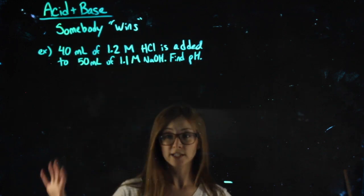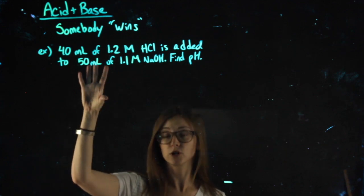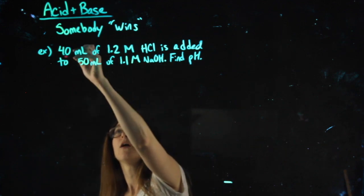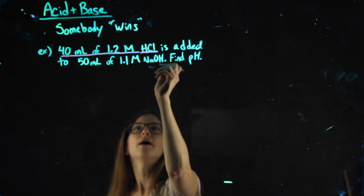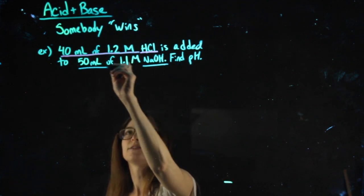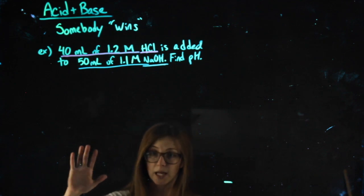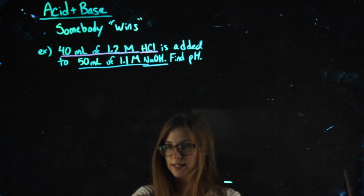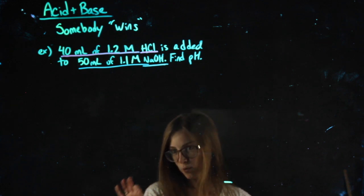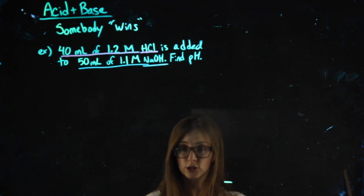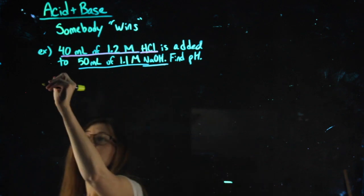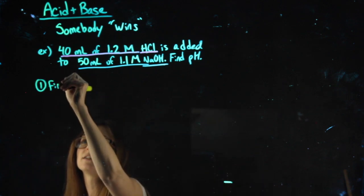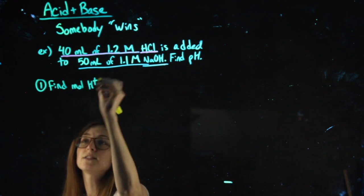What I want to look at first are the somebody wins problems when we have some extra H or OH. In this problem, one of the things we have is an acid - I have its molarity and volume. And one of the things is a base - I have its molarity and volume. So that's how I know this is an acid plus base problem. It's not a neutralization or titration because those words aren't in the problem. Step one is we want to find the moles of H+ for the acid.